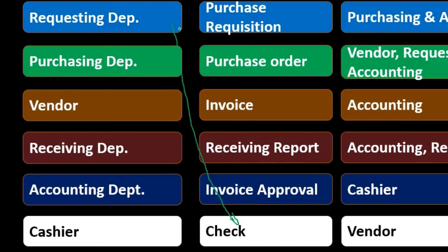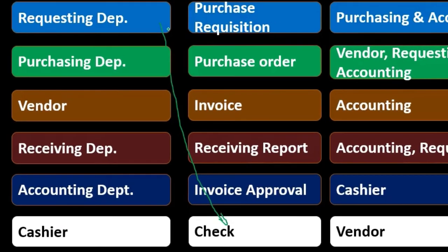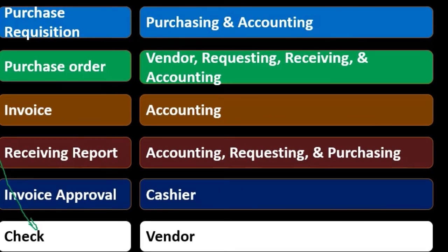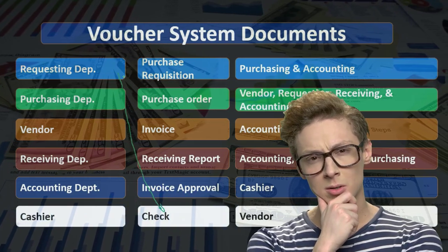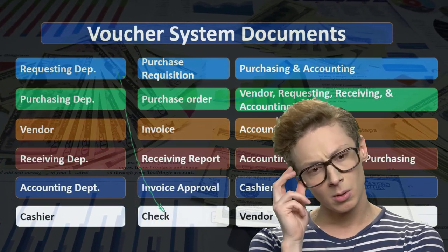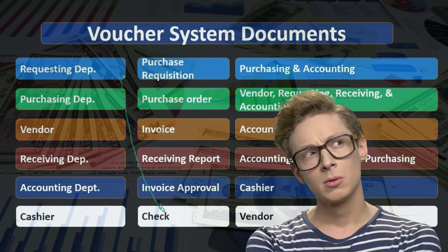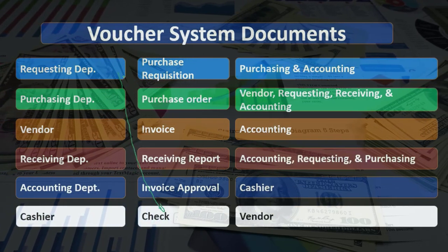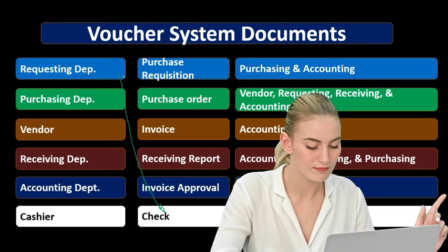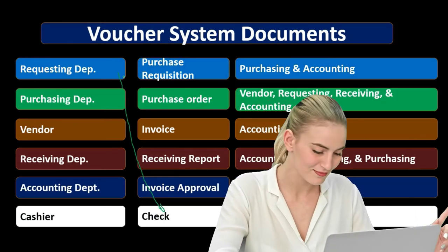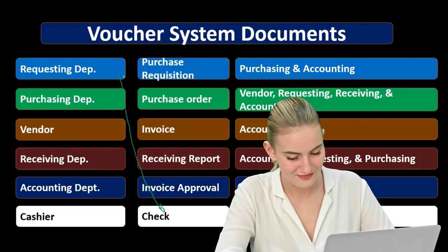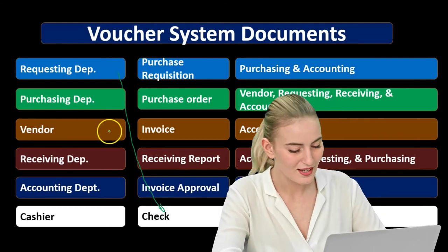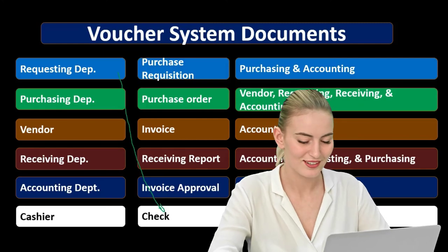As we grow, our goal will be to figure out what the best system of internal controls will be. Is a small system going to work — can we just have an approval process by management or the owner — or do we need a larger system? As we implement that larger system, how many separations and approval processes do we need in order to have an efficient system that also safeguards us against potential problems such as fraud?